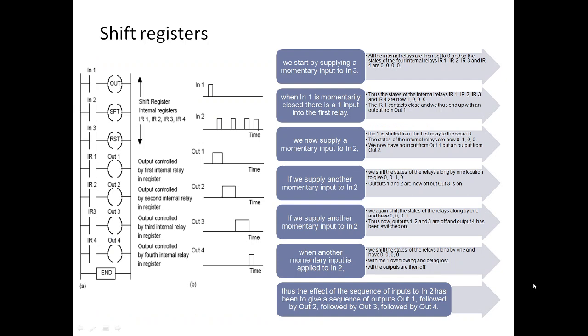We start by supplying momentary input in input 1. When input 1 is momentary, input 1 closes into the first relay. When we supply momentary input to input 2, it closes and when another input is supplied to input 2, the effect of the sequence in input 2 has been given to the sequence of output 1 followed by output 2.